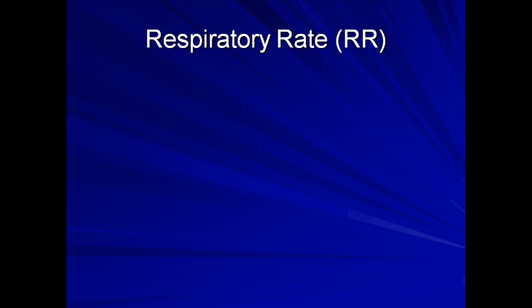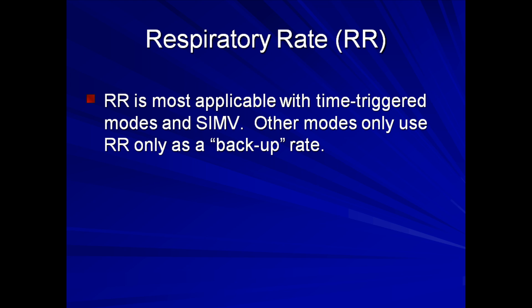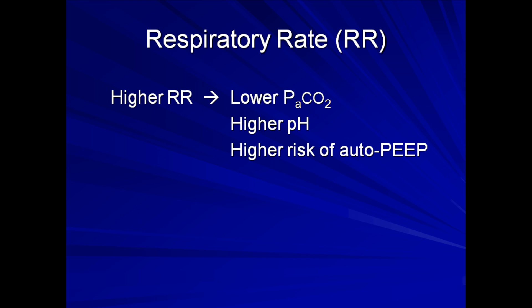Next is respiratory rate. This is most applicable with modes that have time-triggering function, such as assist control and SIMV. Other modes, such as pressure support ventilation, only use this value as a backup rate in the event of apnea. Typical respiratory rates are 10 to 20 breaths per minute, in order to provide 7 to 10 liters per minute of minute ventilation. Higher rates result in lower PaCO2s and higher pH, along with a higher likelihood of auto-PEEP, predominantly due to decreased expiratory times. However, in ARDS, increased minute ventilation might be better achieved through higher rates rather than higher tidal volumes.